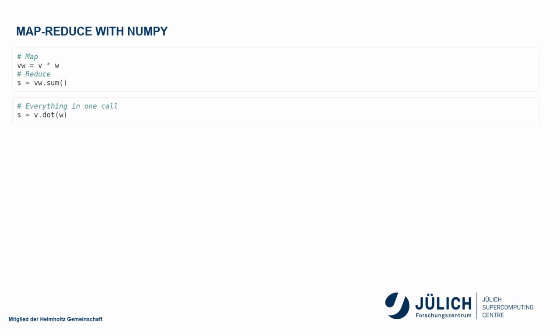However, this is such a common pattern that NumPy has a function for that: dot product, which can apply to vectors or matrices. This is actually the fastest version of the code. Since Python 3.6, you can also write this as V @ W. Python has a matrix multiplication operator.